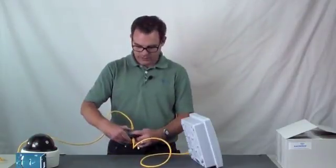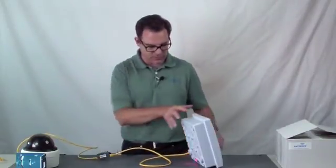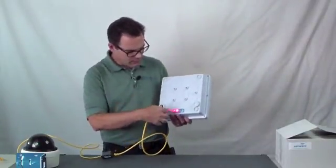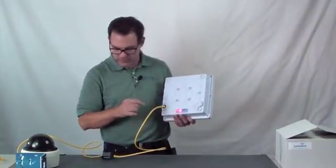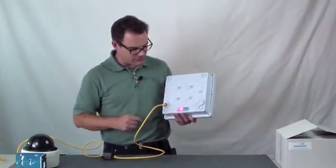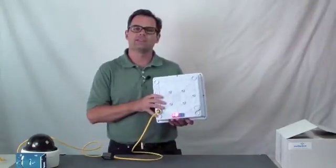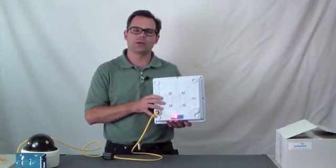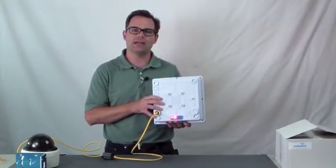Then, we're going to add the power to the power injection module. Again, power. We get a green link light on the power injection module. We're going to get the link light off to the camera as local activity. And now, the diagnostics just finished running. What actually happens is it takes about a minute to get a full link registered between the client and the AP.